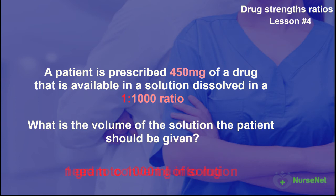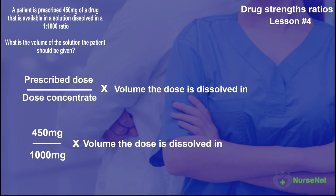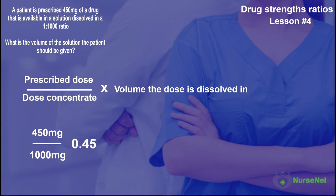We need to convert the 1 gram — the dose concentrate — into milligrams: 1 multiplied by 1,000 gives us 1,000 milligrams. Now we can punch the numbers into our drug calculation: 450 milligrams divided by 1,000 milligrams equals 0.45. Then 0.45 multiplied by the volume of the solution — 1,000 milliliters — gives us 45 milliliters.